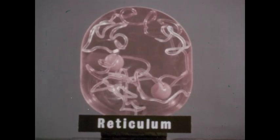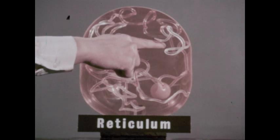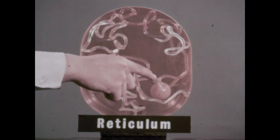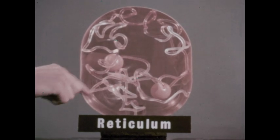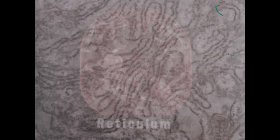Another organ within the cytoplasm is the endoplasmic reticulum, a network of narrow channels that runs throughout the cytoplasm. Under the electron microscope, the endoplasmic reticulum looks like dark threads. This organ is thought to function somewhat like a circulatory system within the cytoplasm.